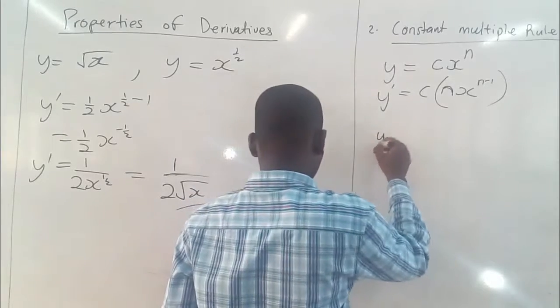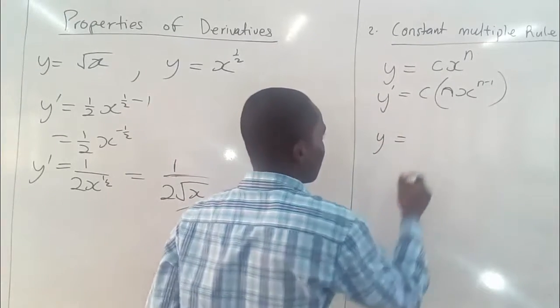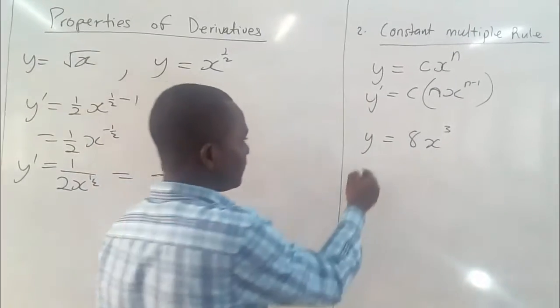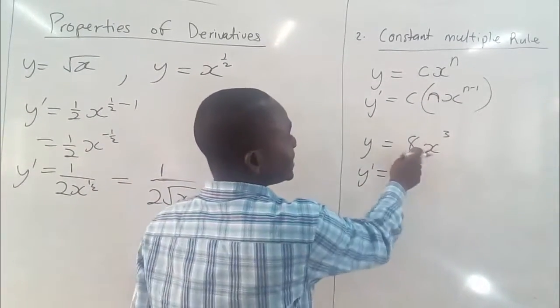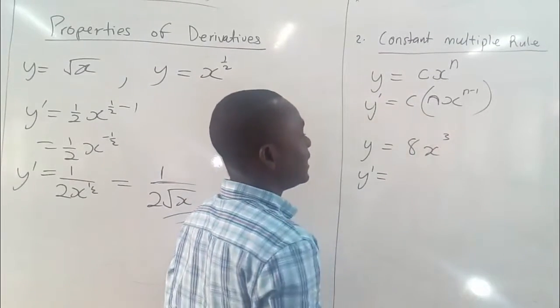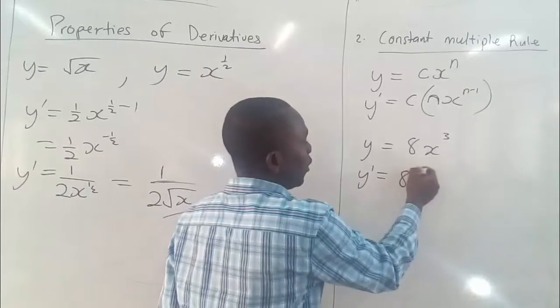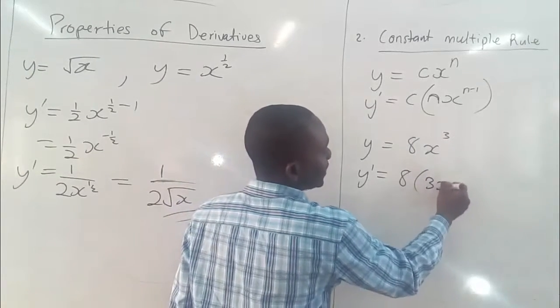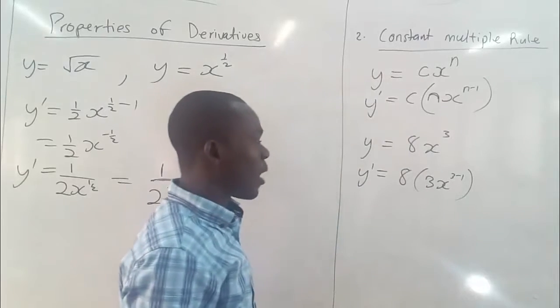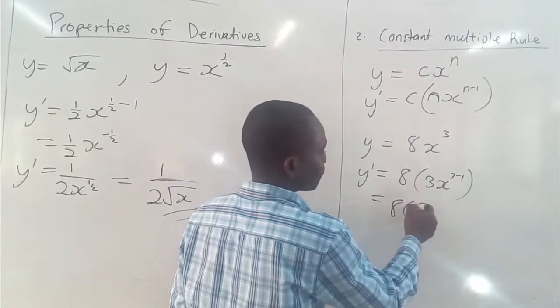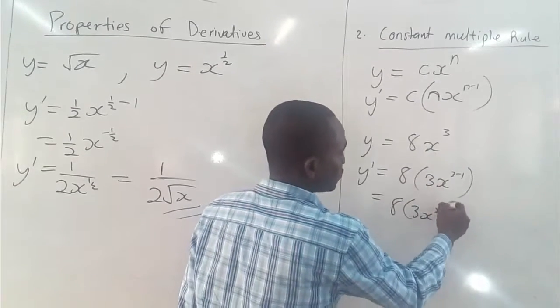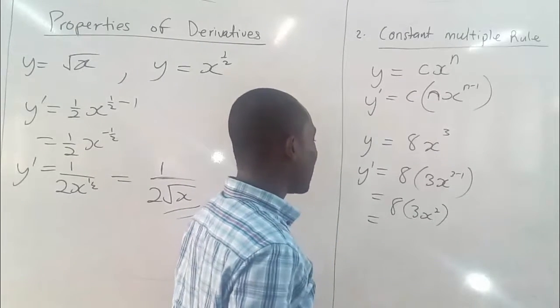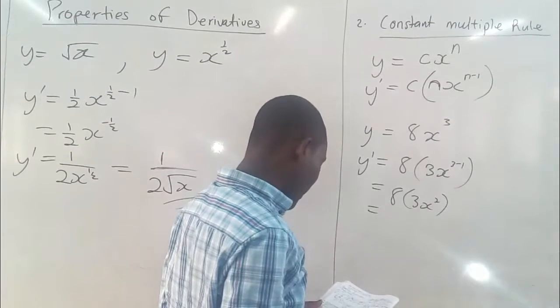For example, assuming we have y equals 8x cubed, what would be our first derivative? Taking our first derivative, we see that this 8 is a constant multiple. That means it's multiplying the x cubed. So we factor that out or we separate it. Then we differentiate the x cubed so that we have 3x to the power 3 minus 1. Then we further simplify to get x to the power 2.